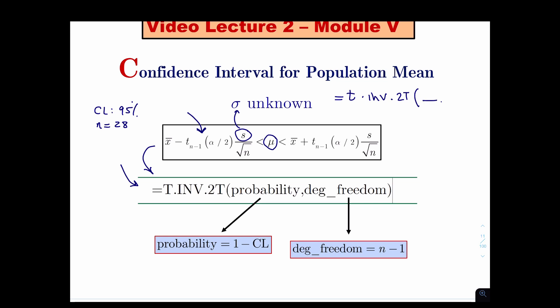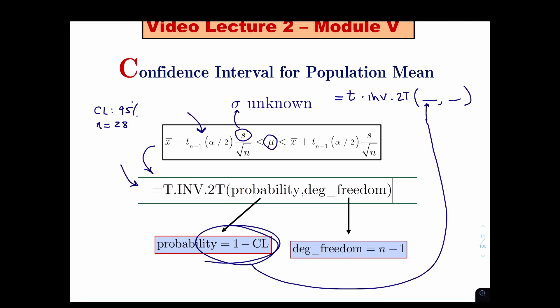You have to write two things in that command. The first one is one minus the confidence level. So if the confidence level is 95%, one minus 0.95 is 0.05 — that's the area in both tails outside the belly. The second number is called degrees of freedom, which by definition is n minus one. So if your sample size is 28, the degrees of freedom will be 27.